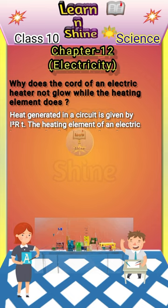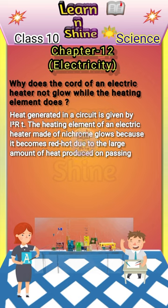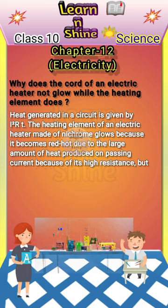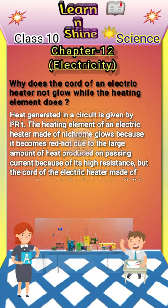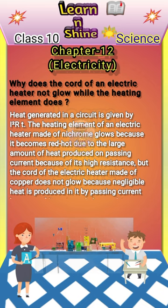The heating element of an electric heater, made of nichrome, glows because it becomes red hot due to the large amount of heat produced on passing current, because of its high resistance. But the cord of the electric heater, made of copper, does not glow because negligible heat is produced in it by passing current, because of its extremely low resistance.